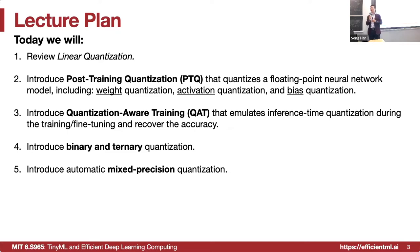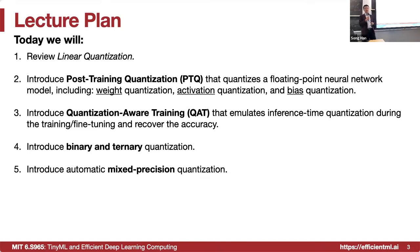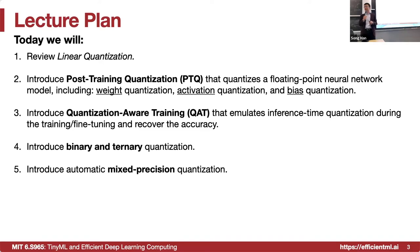We'll introduce how to quantize the weight, the activation, and also the bias. In order to fine-tune and recover the accuracy loss due to quantization, we'll introduce quantization-aware training (QAT). Then we're going to introduce binary and ternary neural nets to see how we can further reduce the number of bits to only one or two bits. Lastly, we'll talk about mixed precision quantization, which is very popular these days — you can have a mixture of 4-bit, 8-bit, and 16-bit for inference.